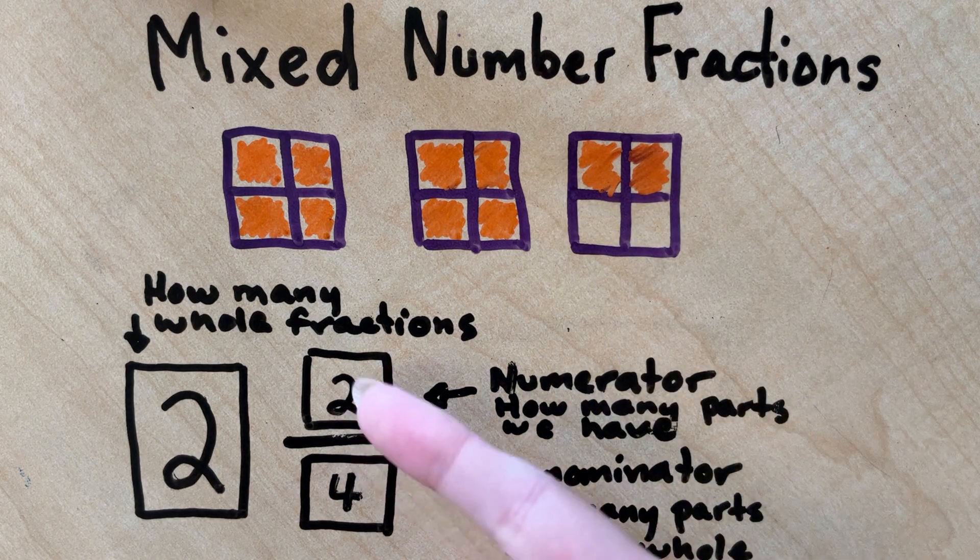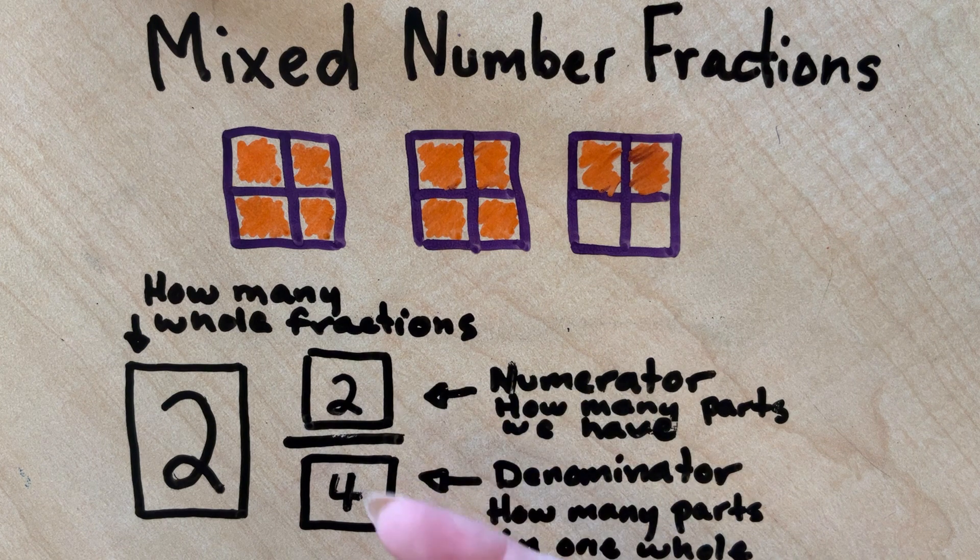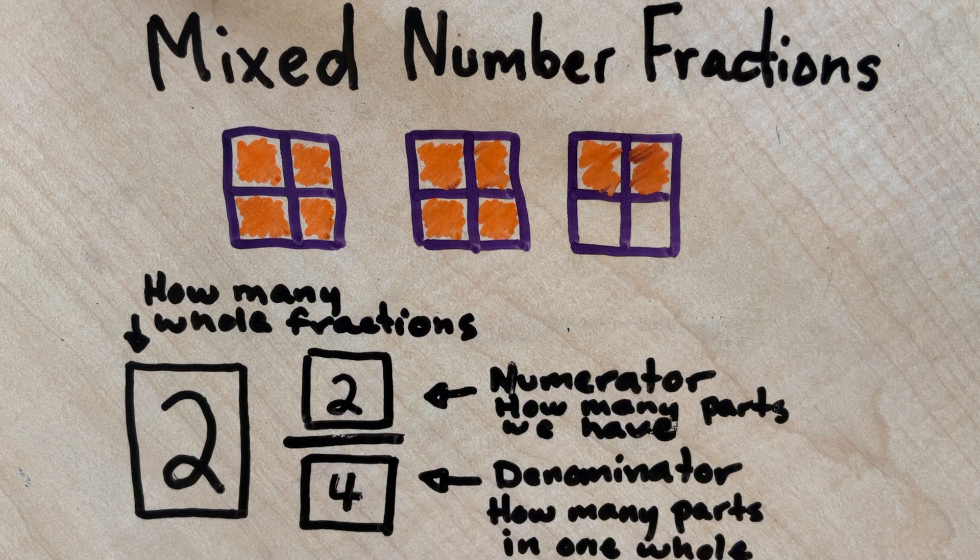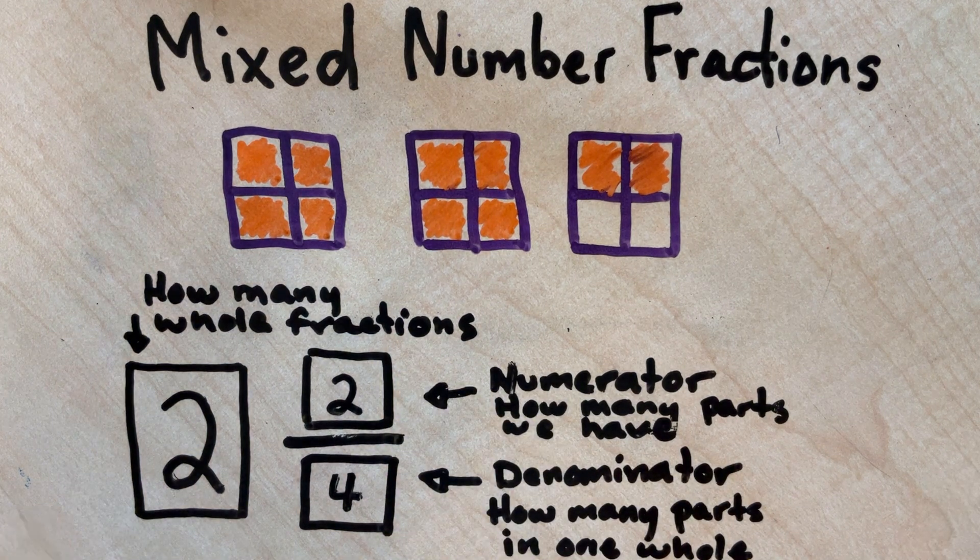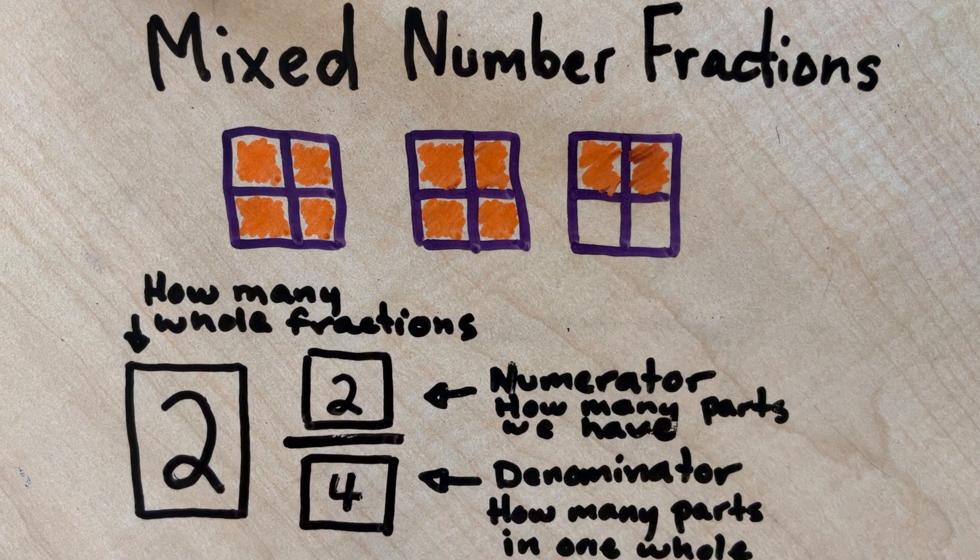So if you needed to simplify it, you could simplify two fourths into one half, and that would still be totally correct. This is how you make a fraction like this into a mixed number.